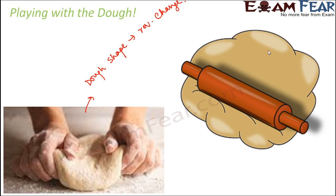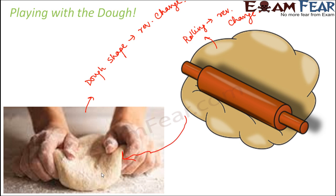How do you prepare chapati? You take the dough, use a roller to roll it into circular rotis, and then bake it. As far as rolling the chapati is concerned, that is also a reversible change. You can roll the chapati and if you don't like the shape, you can bring it back to the shape of the dough and roll it again. So rolling is a reversible change. But once you have baked it on the tawa, things change.